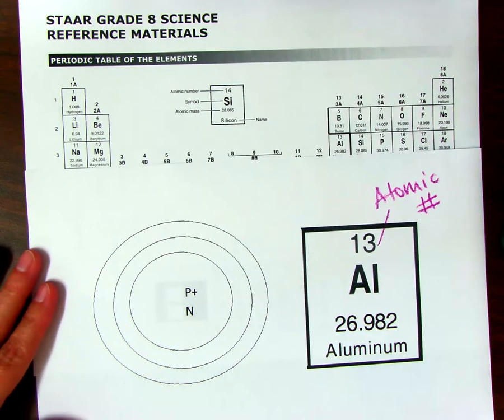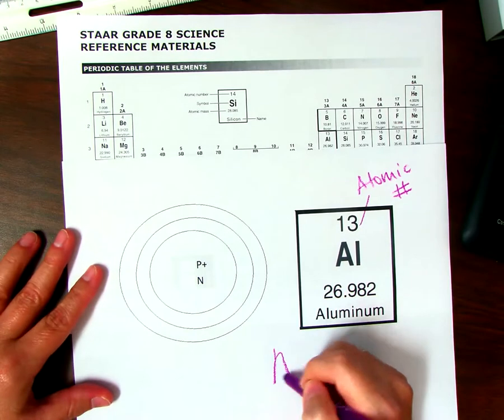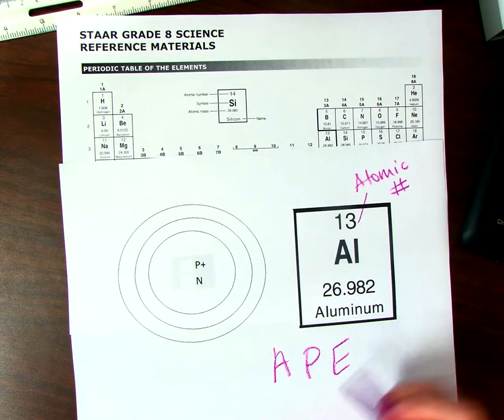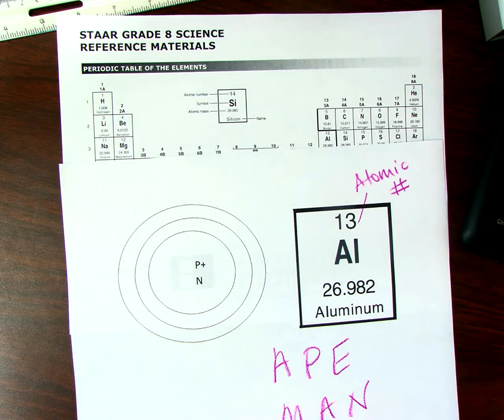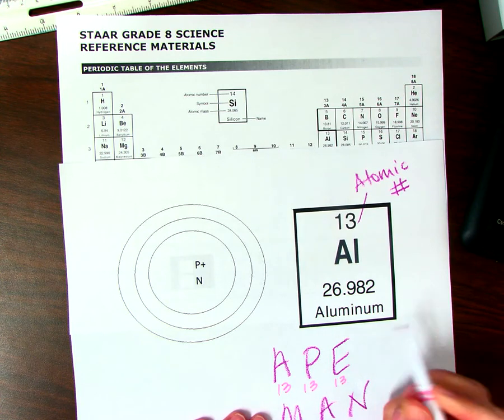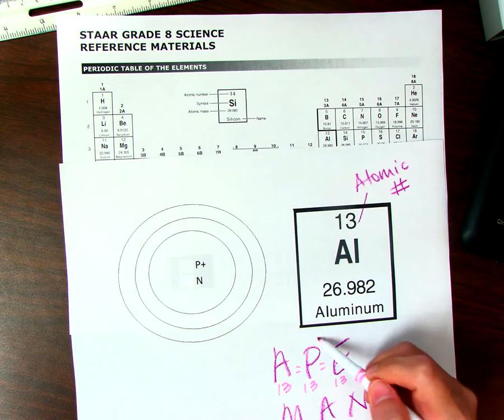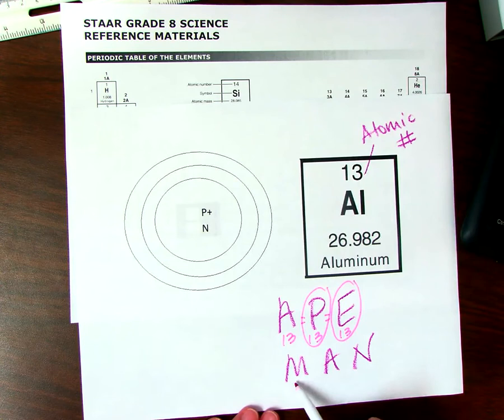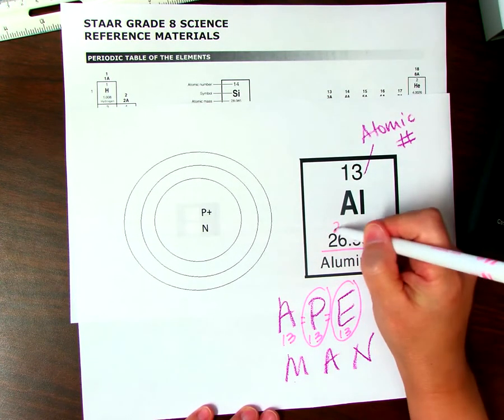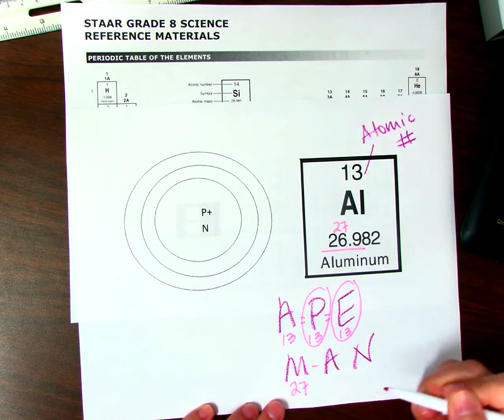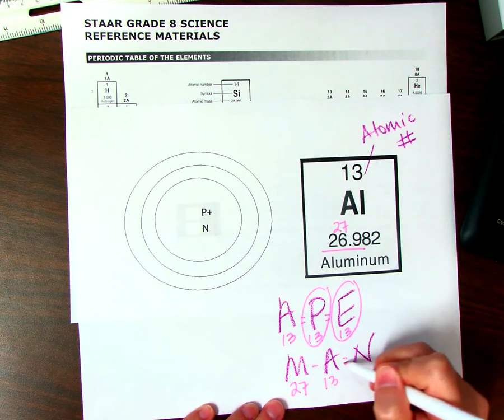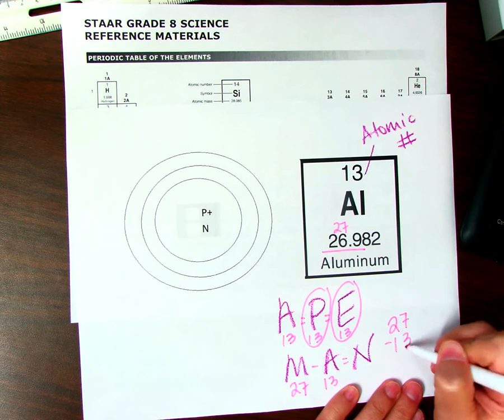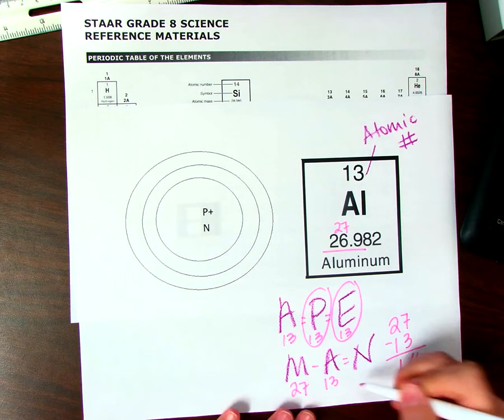So we apply that to Ape Man. Okay, so it's 13 equals 13 protons equals 13 electrons. We have 13 protons, 13 electrons, and we need to figure out how many neutrons. So we take the mass, we have to round this. That'll be 27, 27 minus the atomic number 13. 27 minus 13 is 14, so that equals 14 neutrons.